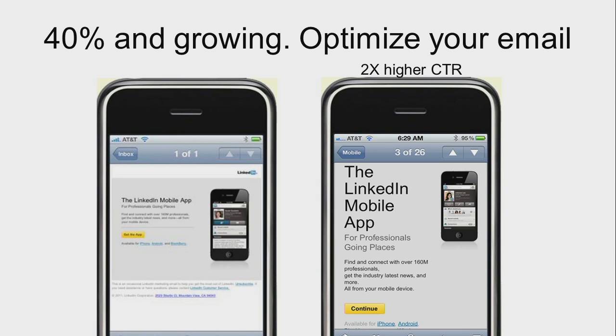40% of emails today are read on a mobile device — pretty amazing. By the end of the year, it's projected to surpass 50%, and that will probably never go back. If you're not optimizing your email, you're losing a huge chunk of your member base. Tracking this matters, and acting upon it matters. A simple test we did — increase the font size — caused a 2x increase in click-through rates on our emails. If you're tracking this data, you can make decisions and change your products based on it.